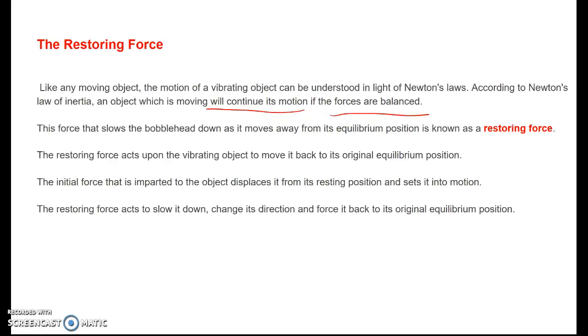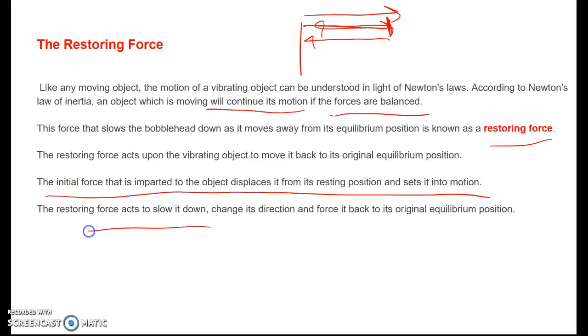The force that slows the bobblehead, so when we go away from the equilibrium position, is called the restoring force. And what the restoring force does is it pulls it back towards equilibrium. So as it moves away, it slows down. Once it gets to its point where the forces are balanced, then the restoring force will pull it back. So the initial force that starts it makes it move this way, and then the restoring force slows it down and makes it come back to equilibrium position. So restoring force restores it back to its equilibrium position.